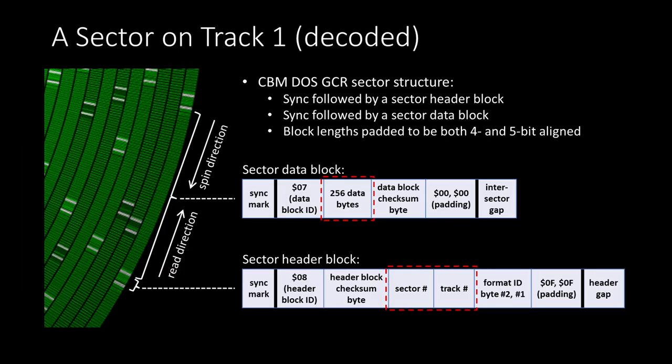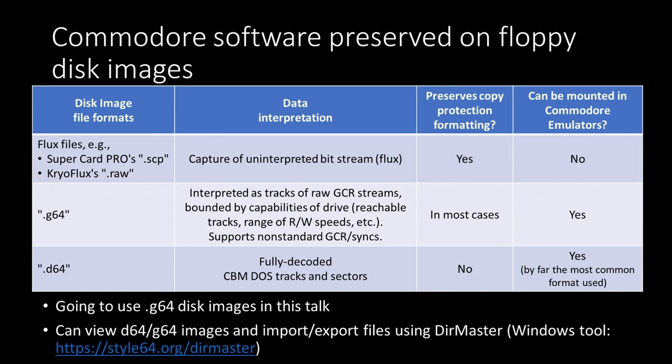Here's what a sector looks like on track 1, the outermost track. The first thing you hit for a sector is the header block, which has the sector number and track number on it. Then you hit the data block, which holds the 256 bytes in that sector. You can't ask Ghidra to control a Commodore floppy drive in real time, so first we need to make an image file of the floppy disk and load that into Ghidra.